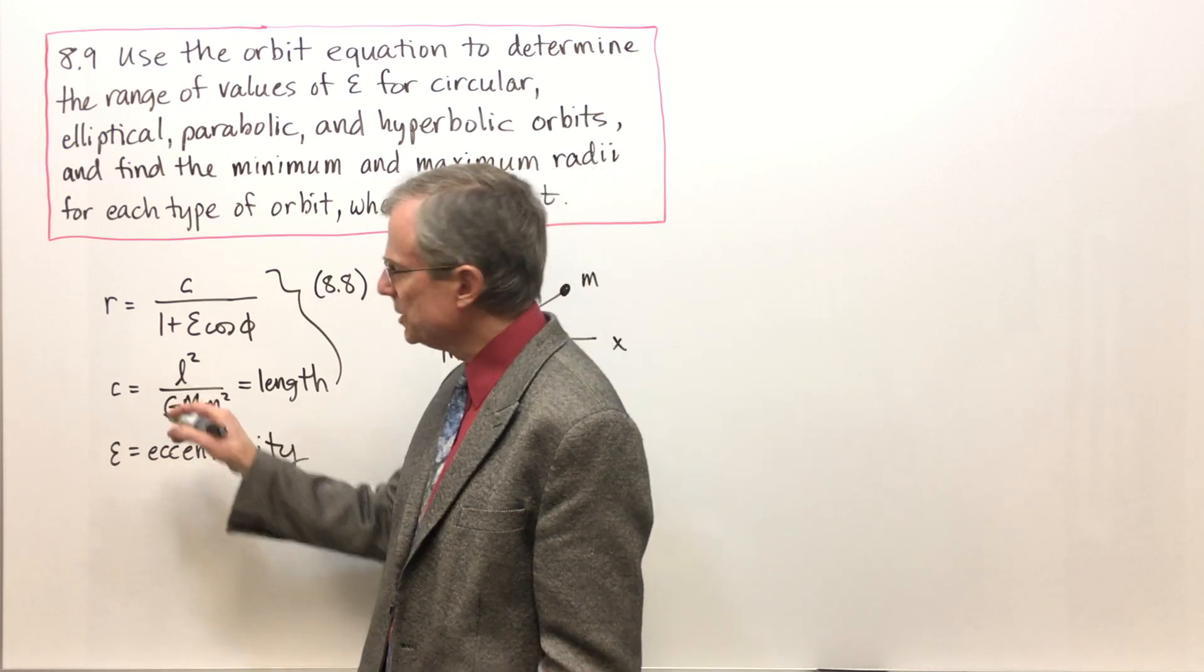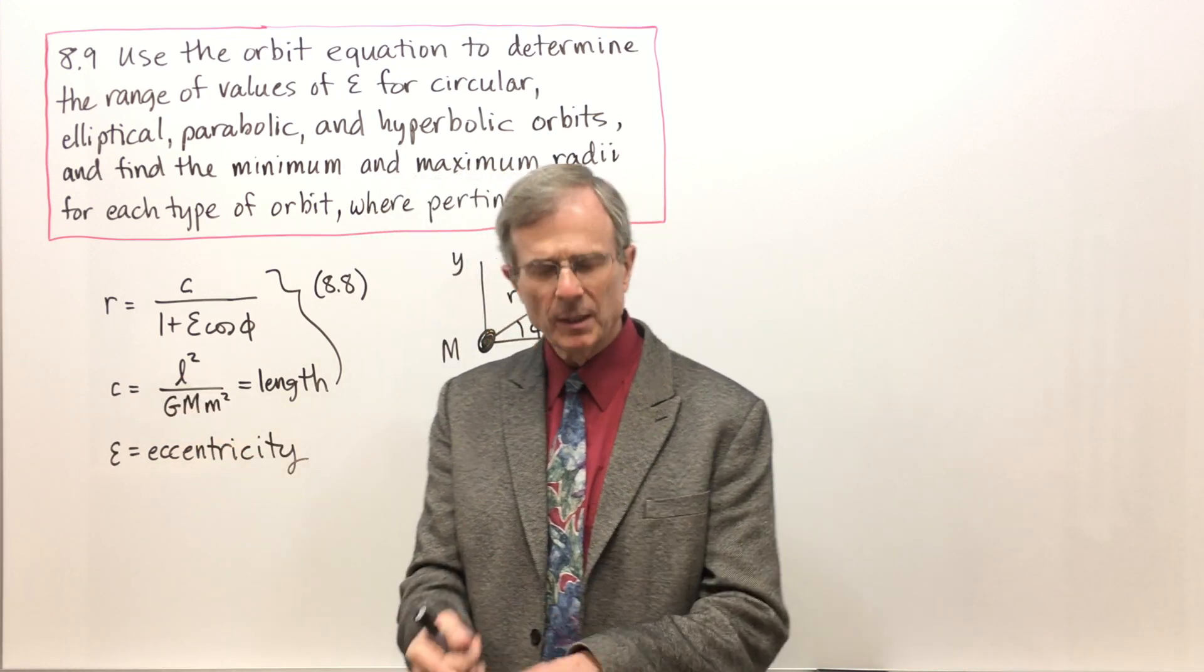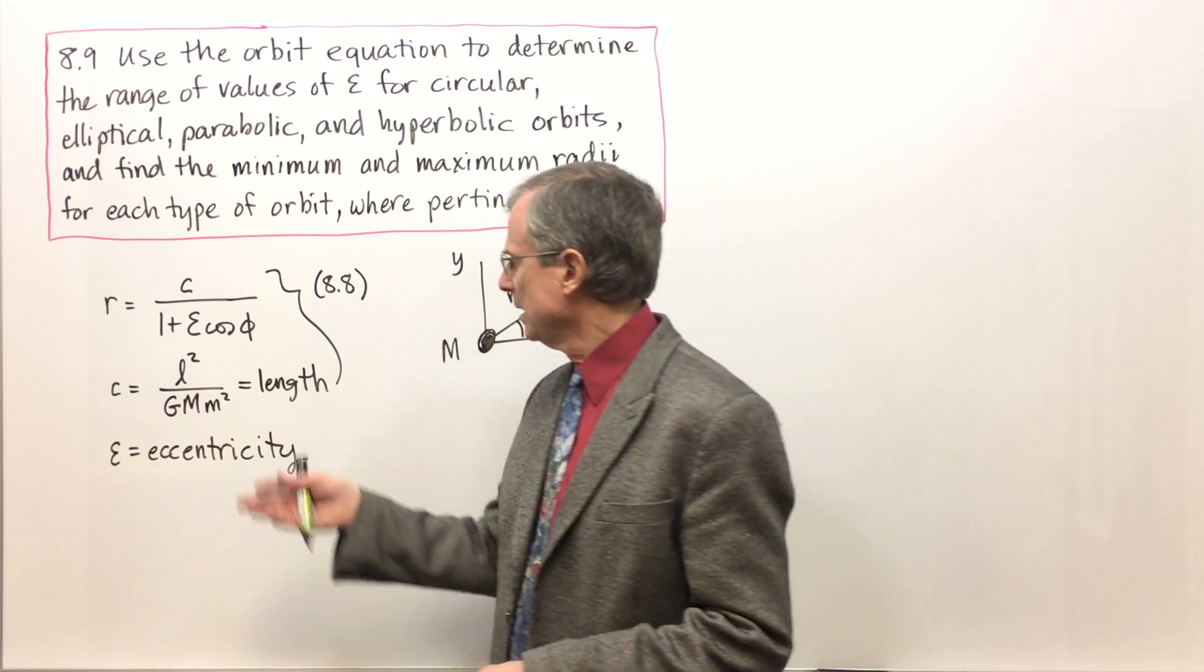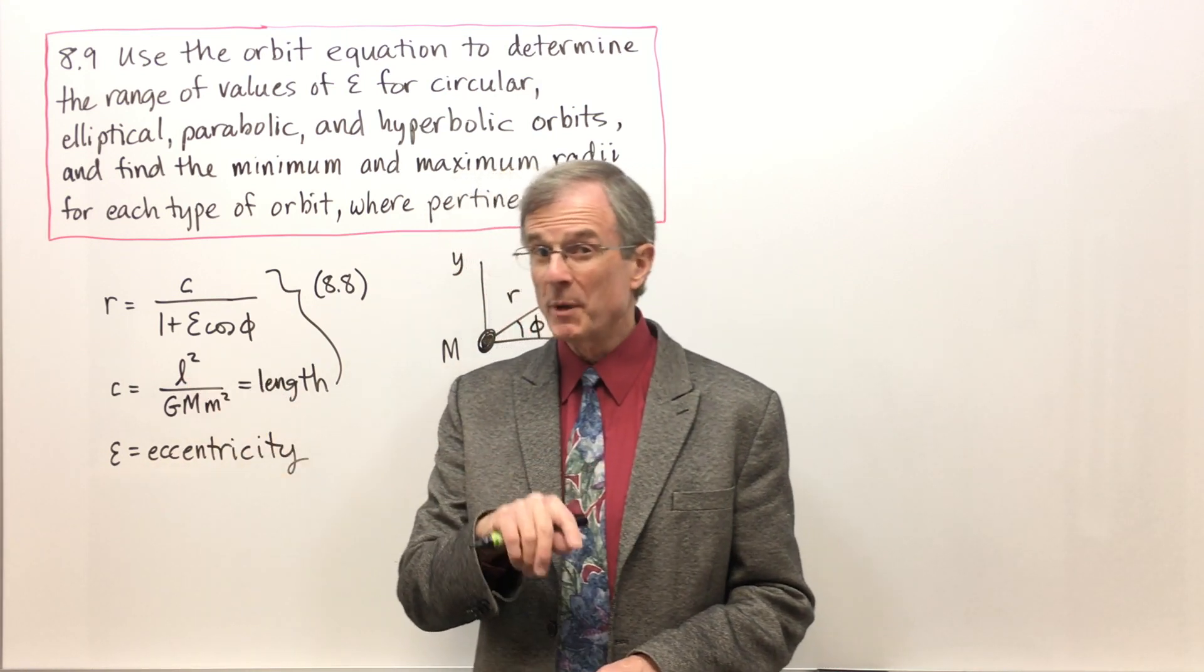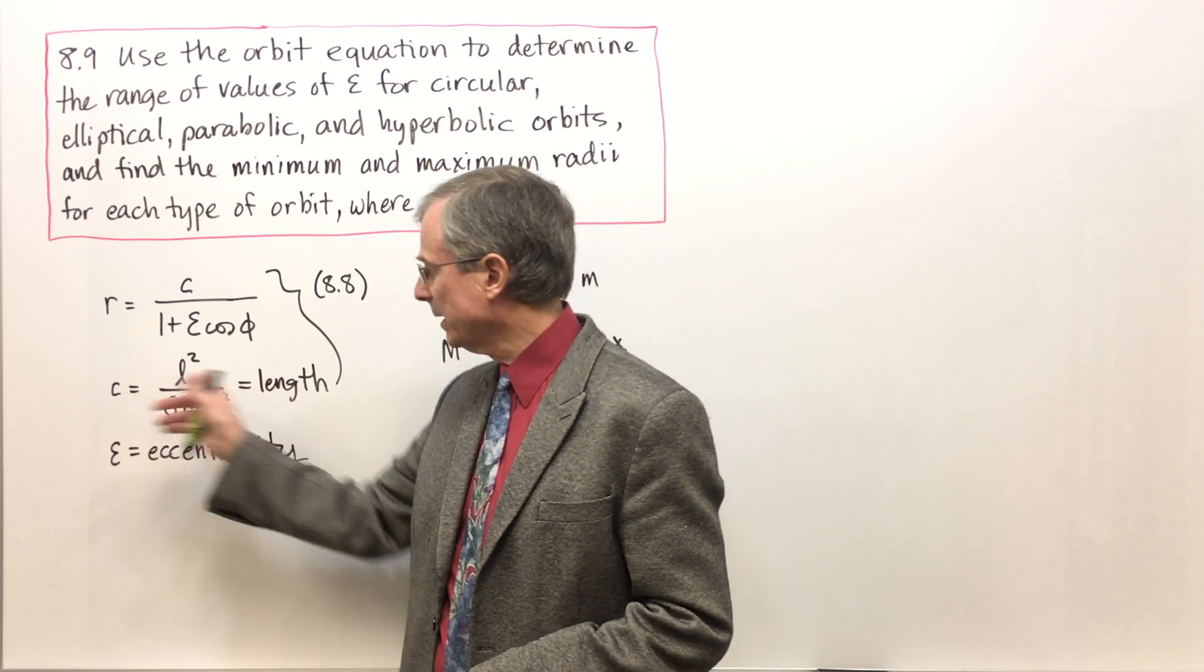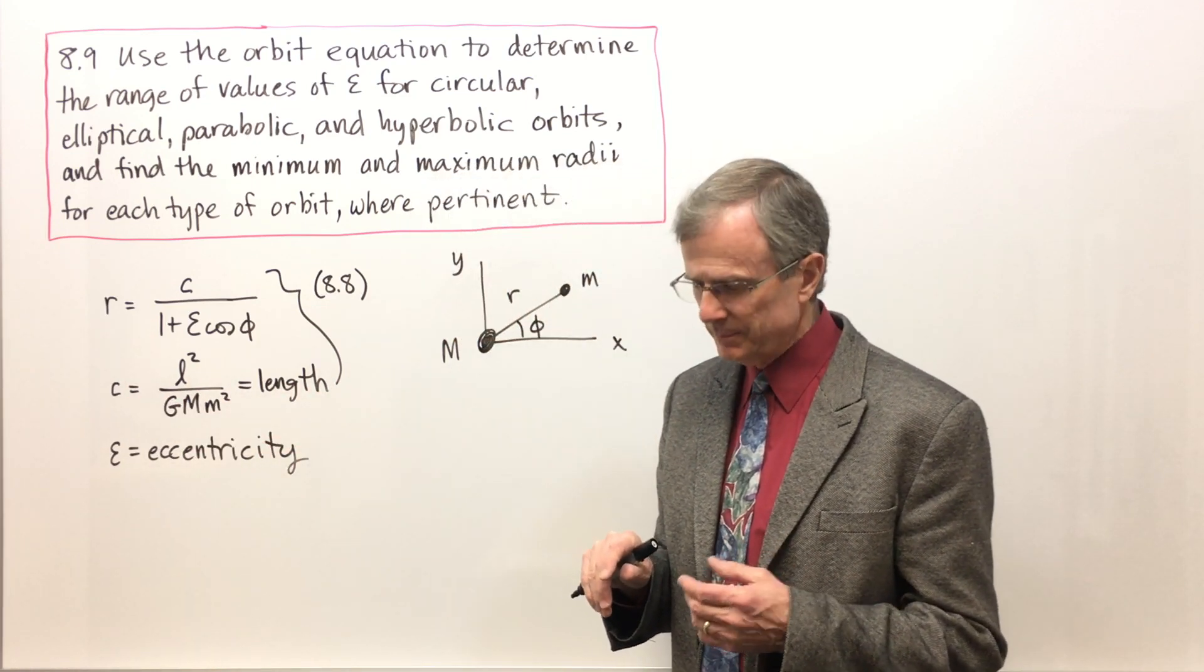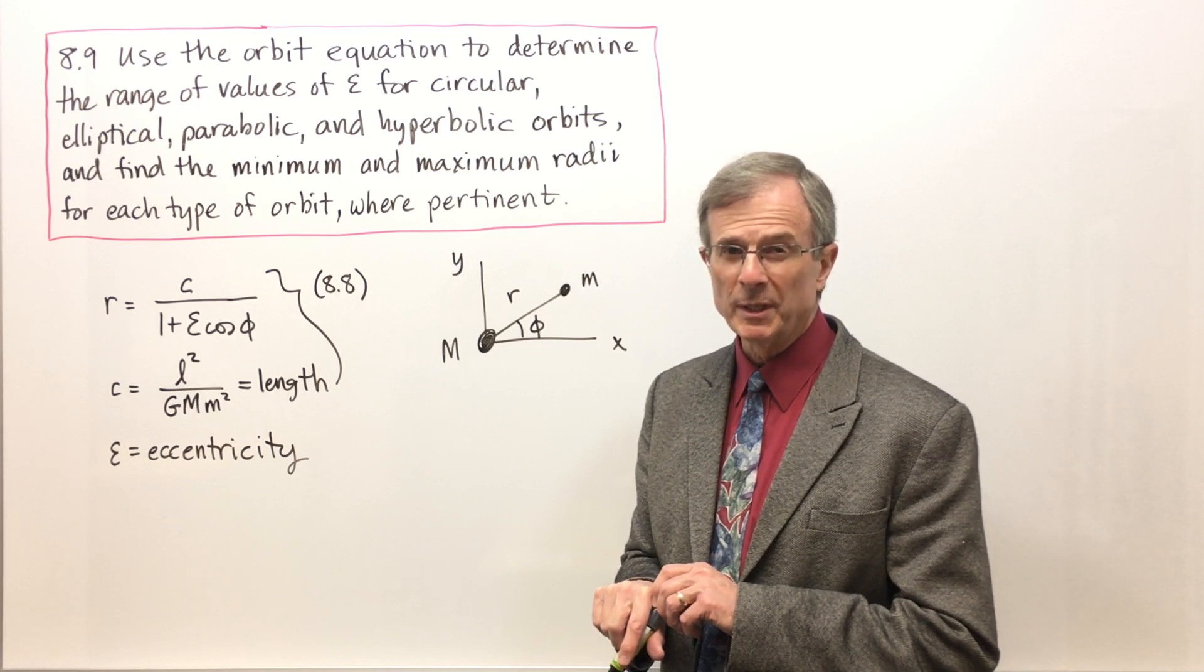C here is a length and it's determined. If you tell me the mass of the sun, the mass of the planet, the gravitational constant, and the angular momentum L, then I'll tell you what that length is. We will now try and understand what that length really means.